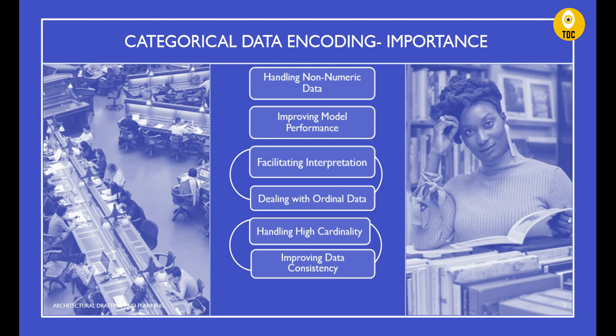The fourth point is dealing with ordinal data. For ordinal categorical variables, encoding methods like ordinal encoding help to preserve the order, allowing the model to understand the relative importance and ranking of the categories. We will see what ordinal encoding and one-hot encoding look like in the next slide.